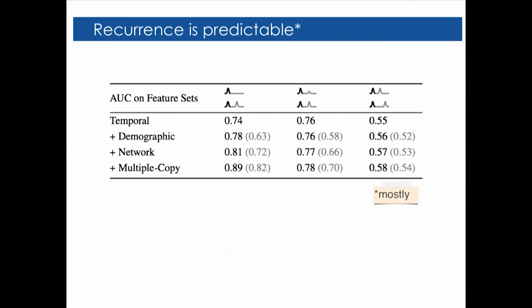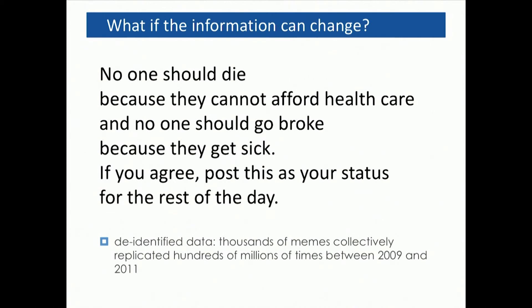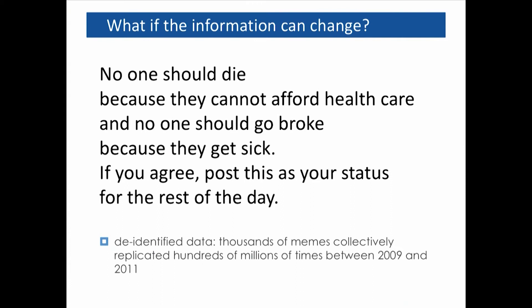Interestingly, in the initial study we looked at multiple copies of the same image as a control — to control for content and look at other features. But the fact that there are multiple copies in and of itself was predictive of whether the image would recur. Another thing not captured by these simple models is that the information itself may be changing. When I say the word 'meme,' that is an analogy to gene. Genes can change over time and they also replicate. In this study, using data from quite a number of years ago, we wanted to see how far we could take that analogy.